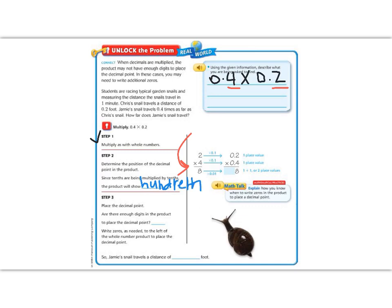Okay, so now it says step 3, place the decimal point. Are there enough decimals in the product to place the decimal point? So if we have 2 times 4 is 8, and then 4 times 0 is 0, and then we go to our magic 0, and we say 0 times 2 is 0, and 0 times 0 is 0.